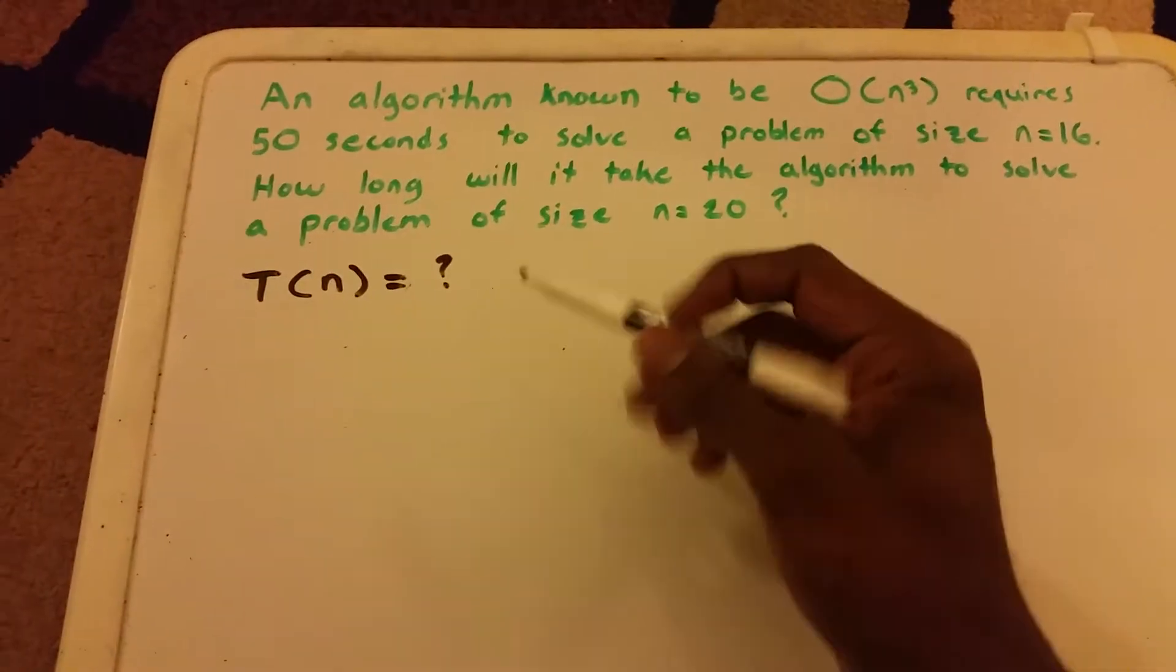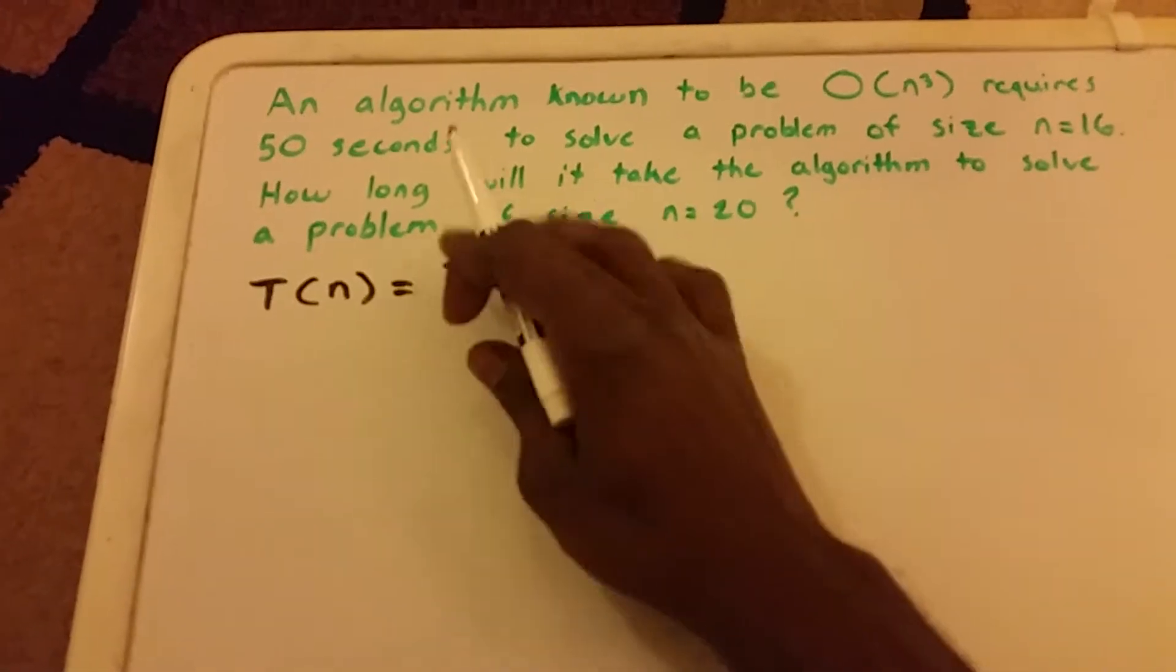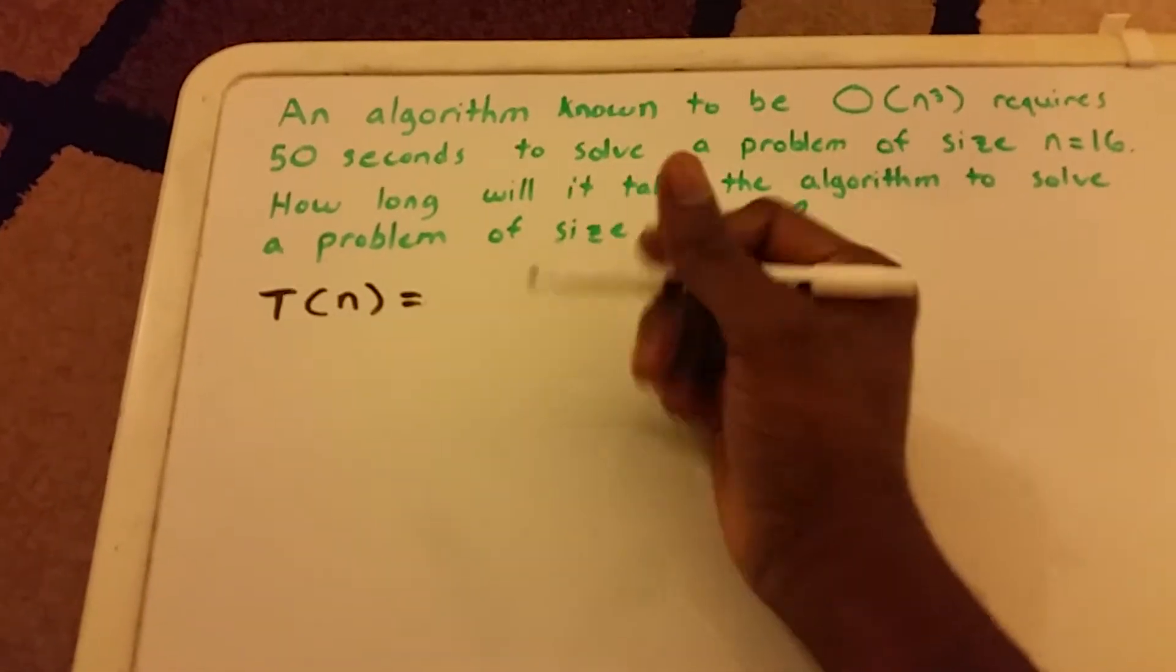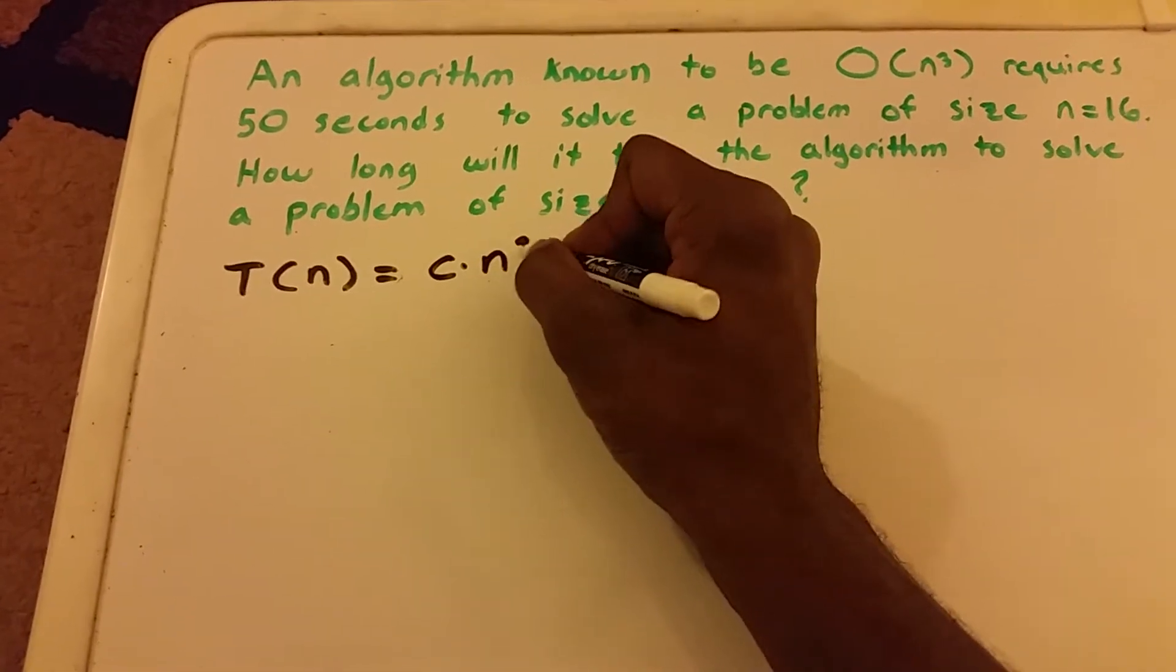So what we have here is they said we have an algorithm known to be big O of n cubed. So what does it mean for an algorithm to be big O of n cubed? It means that it's equal to some constant times n cubed.